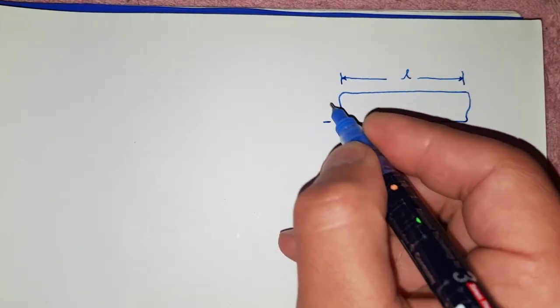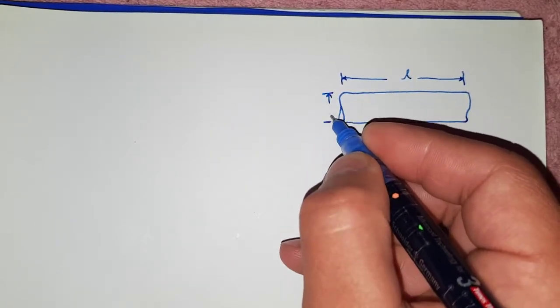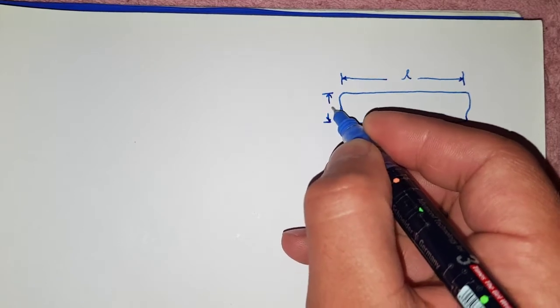Okay, this is the diagram of a bar. Say it has a length L and a diameter of small d.